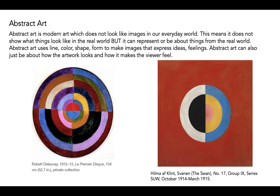Abstract art can also just be about how the artwork looks and how it makes the viewer feel. The beautiful colors and repetition of circles in both of these paintings makes me feel very calm, and the bright colors are very inspiring and cheerful. The painting on the right is called The Swan. How might these circles represent a swan? What do you see?